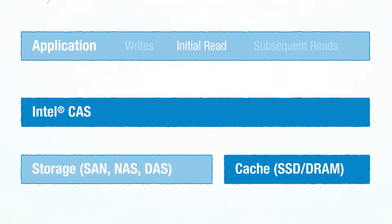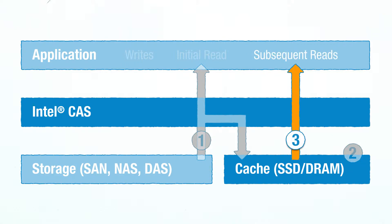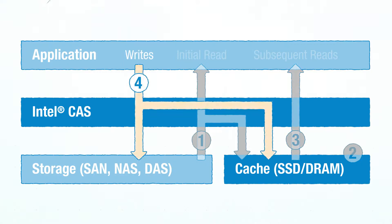Intel Cache Acceleration Software works very simply. The data is read from the backend storage and copied to the cache on the SSD. Further reads promote the data to the system memory, DRAM. Subsequent reads are returned at high-performance DRAM or SSD speed. All data is then written synchronously to storage and cache, ensuring there is no loss of data.